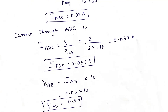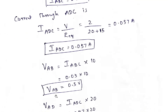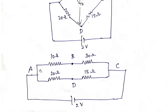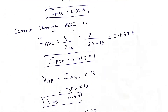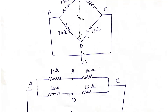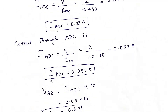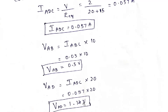Now we need to find out what is the voltage VAB and also VAD. VAB is nothing but IABC into that particular resistance. So VAB equals IABC, that is 0.05, into 10 ohms. VAB is 0.5 volts. Similarly, VAD equals IADC into 20 ohms. So 0.057 into 20 gives 1.14 volts. That is VAD.